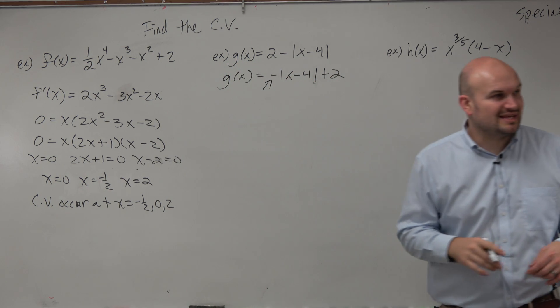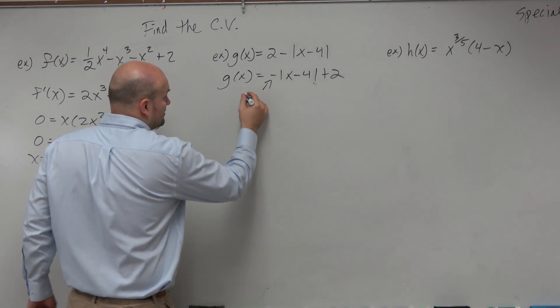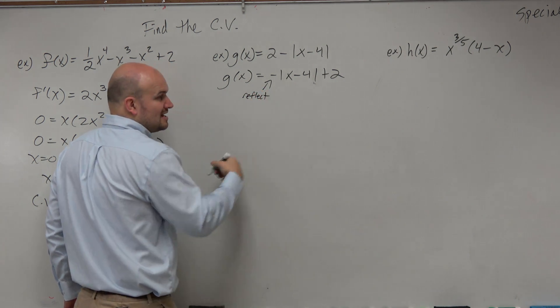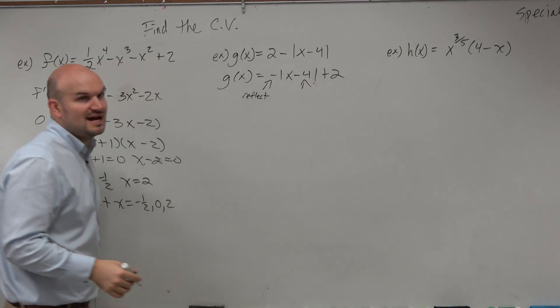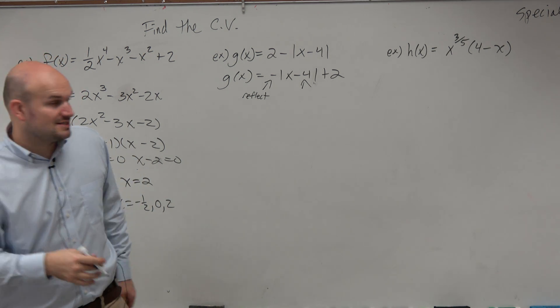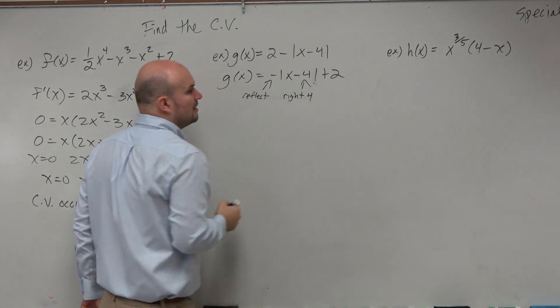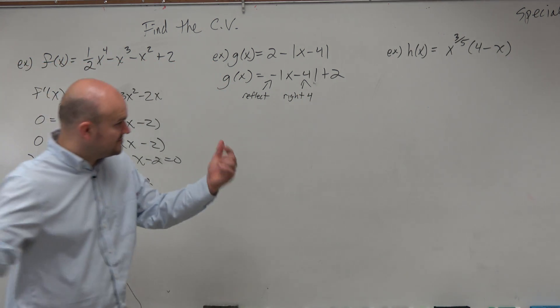When you multiply by negative on the outside, that's reflecting over the x-axis. When subtracting 4 inside the function, that's shifting right 4. And when adding 2 on the outside, that's up 2.